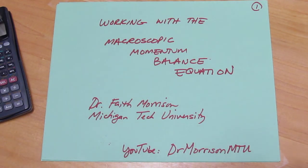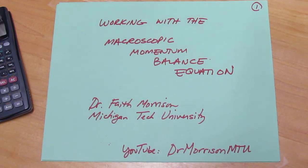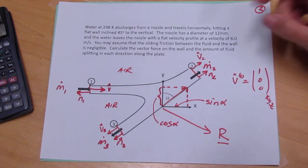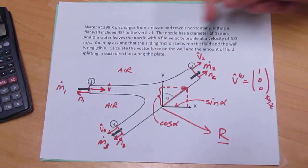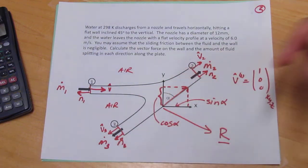This is part two, continuing on the problem of the macroscopic momentum balance equation. The problem we're doing is this one, which is a jet impinging on a wall. Inlet flow M1, outlet flow M2, outlet flow M3.